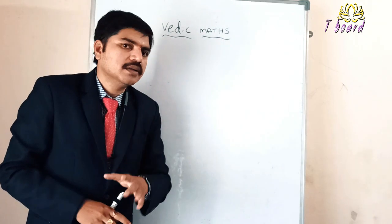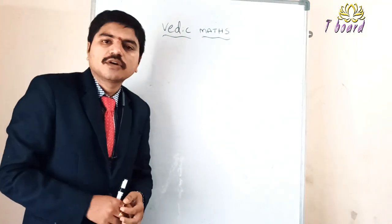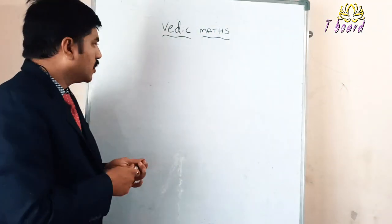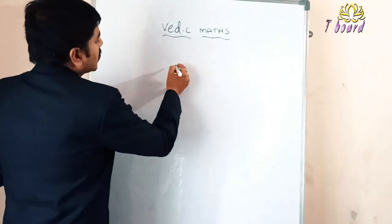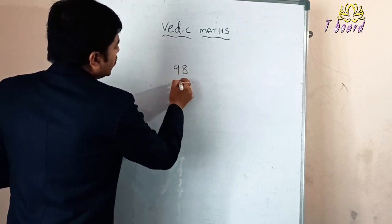They need to just calculate the simple calculations. They can use this kind of Vedic mathematics, 100% useful. For example, I will say for that interaction, I am going to say what is the beauty of Vedic mathematics. Once see here. The Vedic mathematics beauty means, for example, 98 and 97.